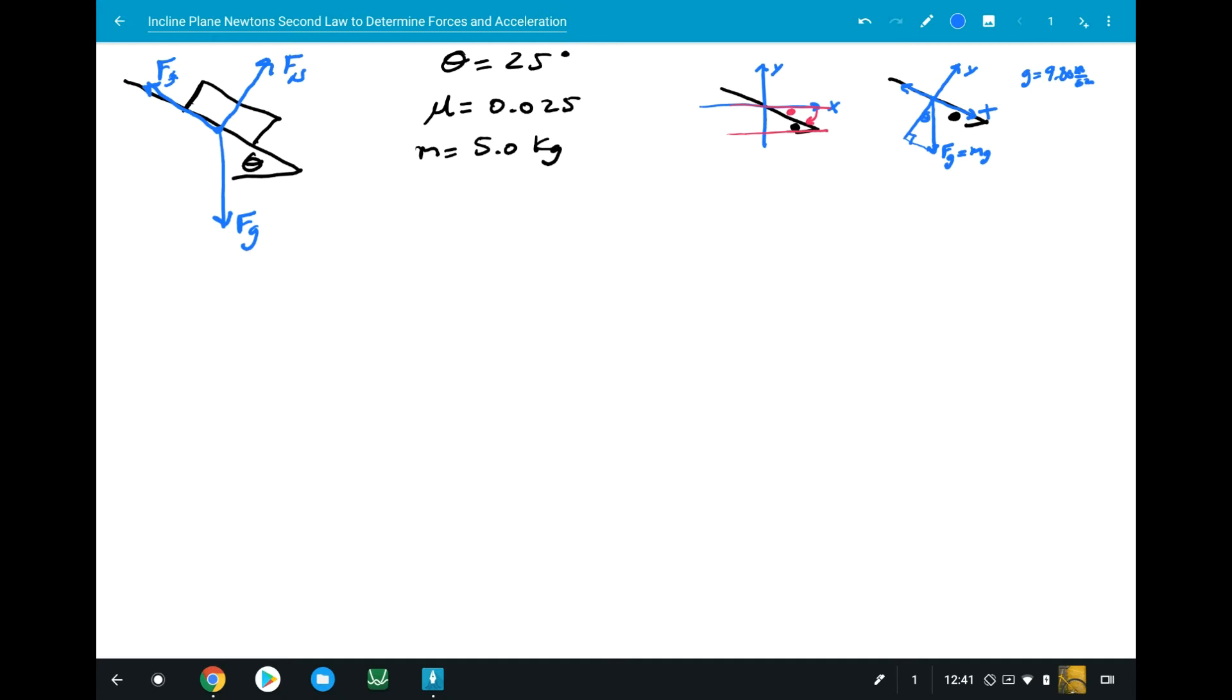Now we have some component vectors. We have a component vector going downward, which is FGy. FGy is equal to FG perpendicular that some teachers like to use. Since theta is between FGy and FG, that's the adjacent. This is going to be Mg cosine theta. That is what that component vector equals.